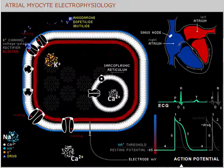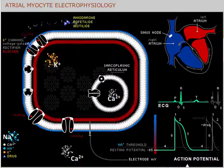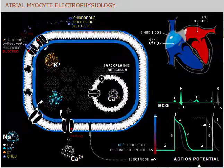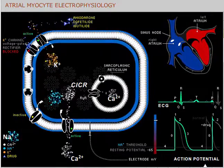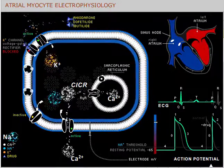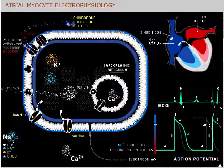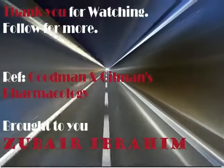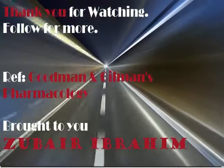The effect of prolonged action potential duration is manifest on the electrocardiogram by a prolongation of the QT interval due to the slowed repolarization of ventricular myocytes. The repolarization of atrial myocytes is not observable on the electrocardiogram.